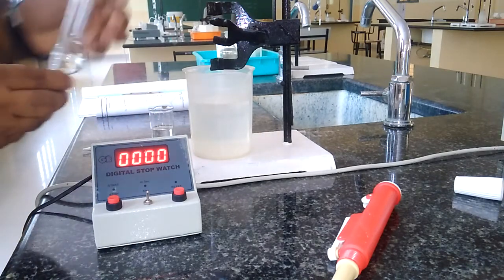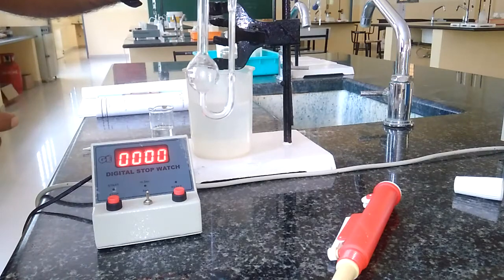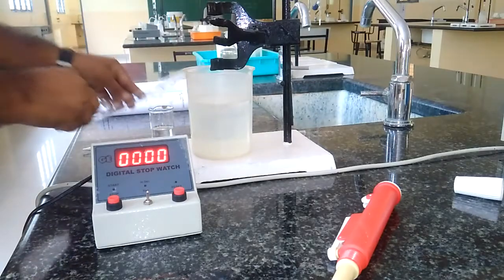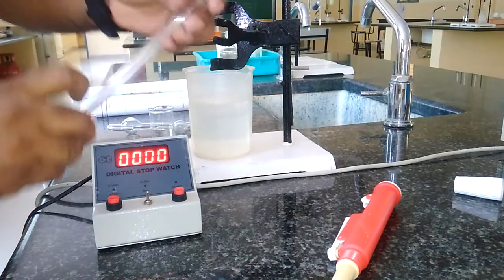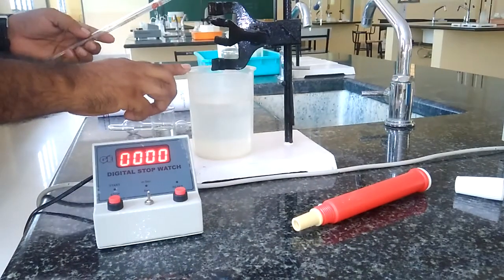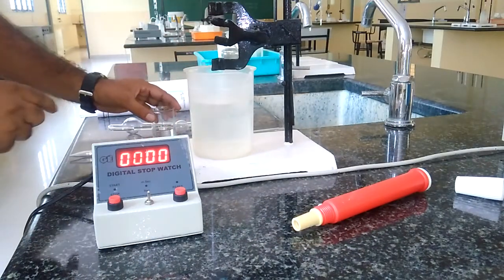The important components are: this is an Ostwald viscometer having two limbs, a big one and a narrow limb. This is a graduated pipette, this is a pipette head, and this is a beaker.